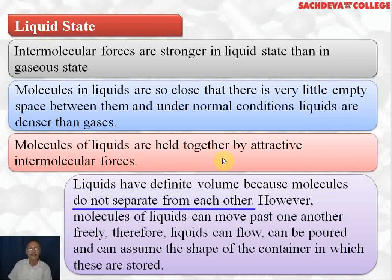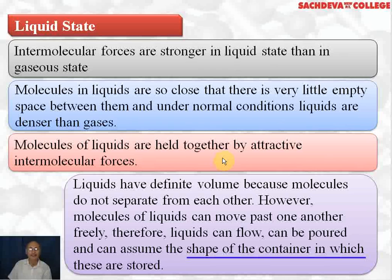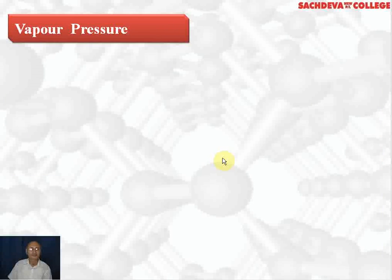Molecules have appreciable force of attraction. However, molecules of liquid can move past one another freely; therefore liquids can flow, can be poured, and can also assume the shape of the container in which they are stored. That is why the shape of liquid is not fixed.